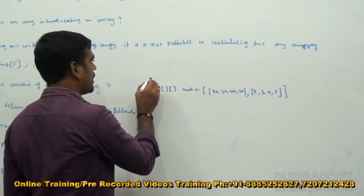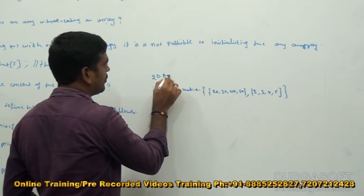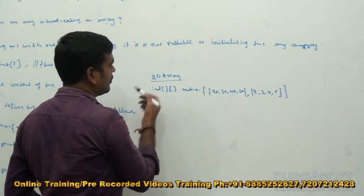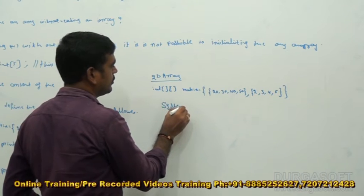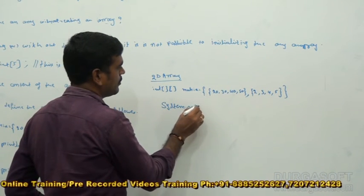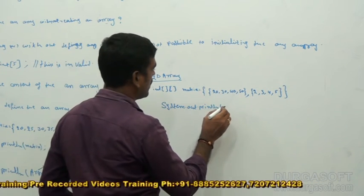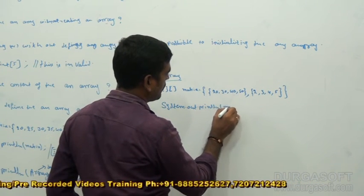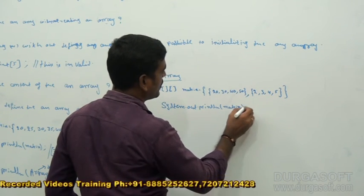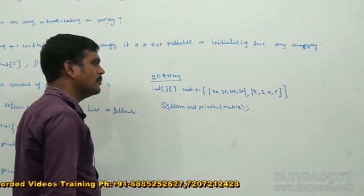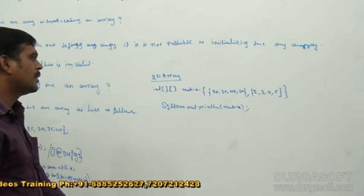Now here, using System.out.println(matrix), when we take the matrix, just the address is going to be printed — address is going to be printed.